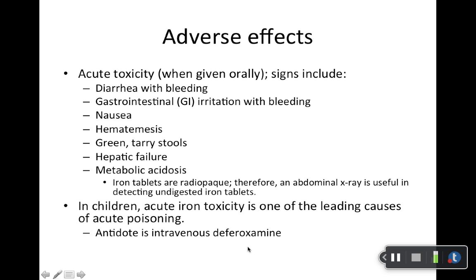I also want you guys to pay attention to acute toxicity adverse effects. GI upset — so diarrhea with bleeding, GI irritation with bleeding, nausea — definitely classify all of those as GI upset. Also related is vomiting with blood and green tarry stools. Discoloration of your stools can happen even when you don't have toxicity, so in the pharmacy we warn people that iron preparations may discolor their feces — not to be freaked out about it. But it is also a sign of toxicity. Lump all these together as GI adverse effects.